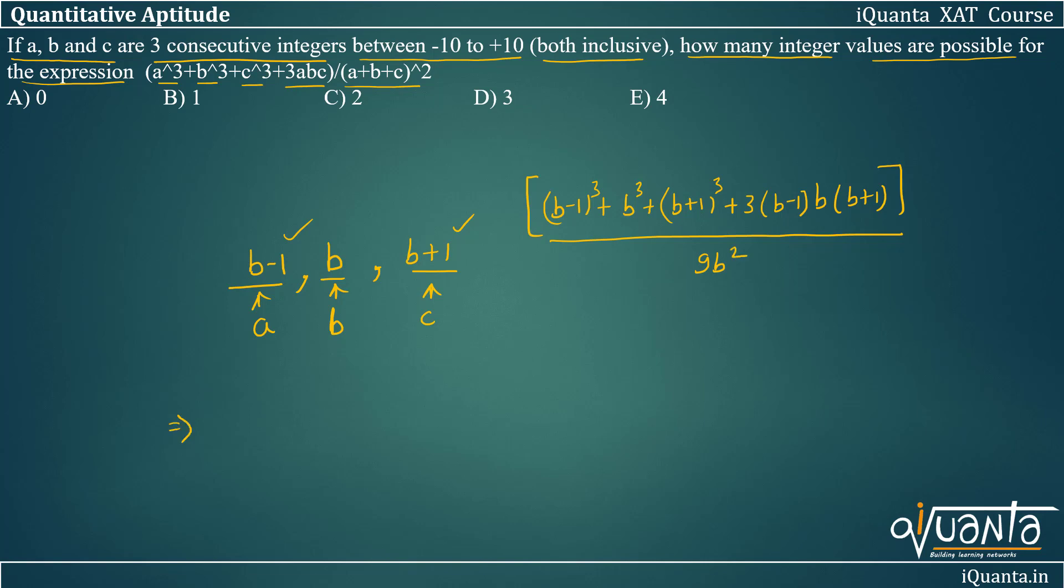After this, in the numerator, we'll be getting B³, B³, B³ from here and one 3B³ from this expression. So we'll be getting total 6B³, plus we'll be getting -1 from here, +1 from here, so both of them will be cancelled.